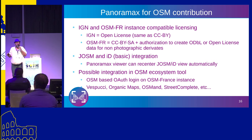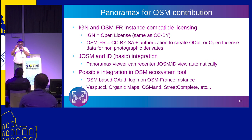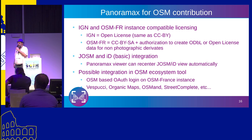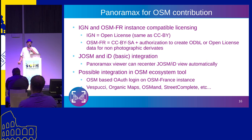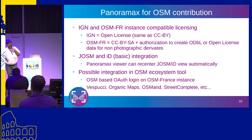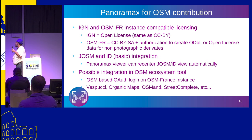There is a very basic JOSM and iD integration — at least there is something. The viewer in Panoramax loads and recenters the view in the editor via a remote control system, which I've been using and it's already very helpful. There's possible integration with all ecosystem tools. An important thing: when you go on the OpenStreetMap instance, you already have an account — it's your OpenStreetMap account. We use the OpenStreetMap OAuth login. On IGN it's separate.